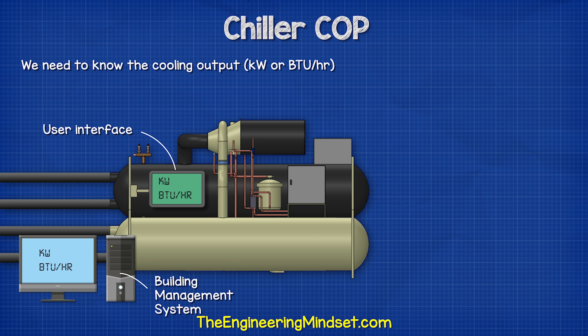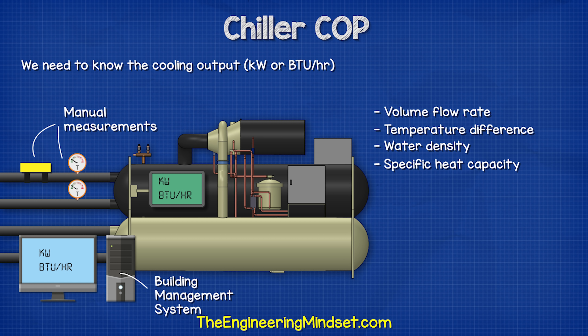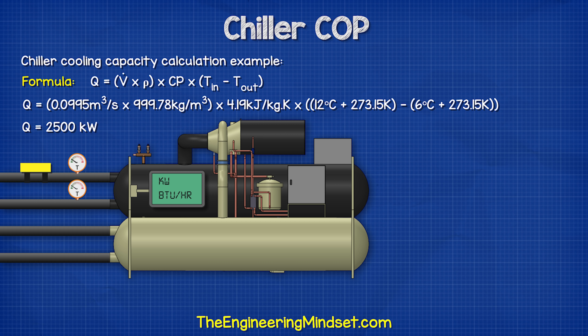Alternatively, if this information is not available, we would need to calculate it by taking some manual measurements for the volume flow rate of the chilled water, then look up the water density and the specific heat capacity, and then measure the difference in temperature between the water entering and leaving the evaporator. That is beyond this video but I'll just show you a sample calculation for how this is done.